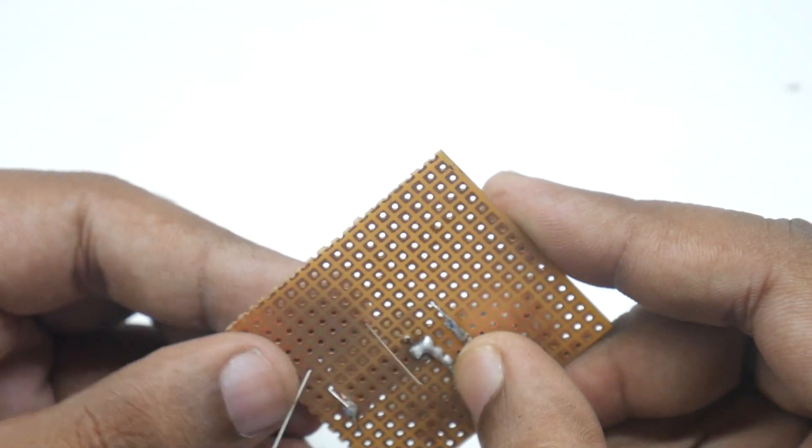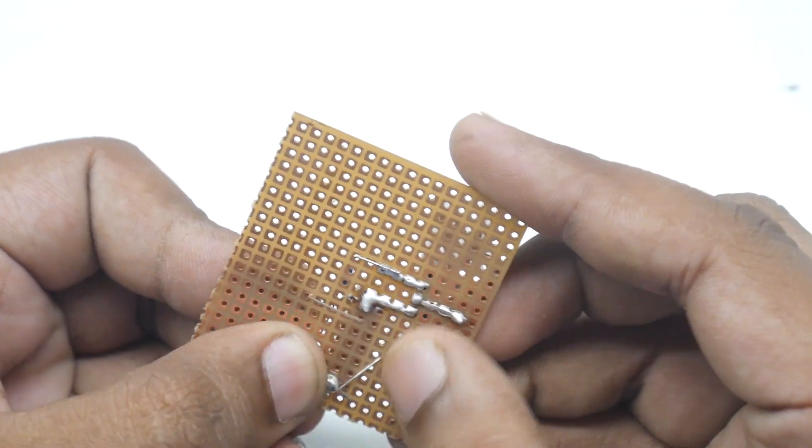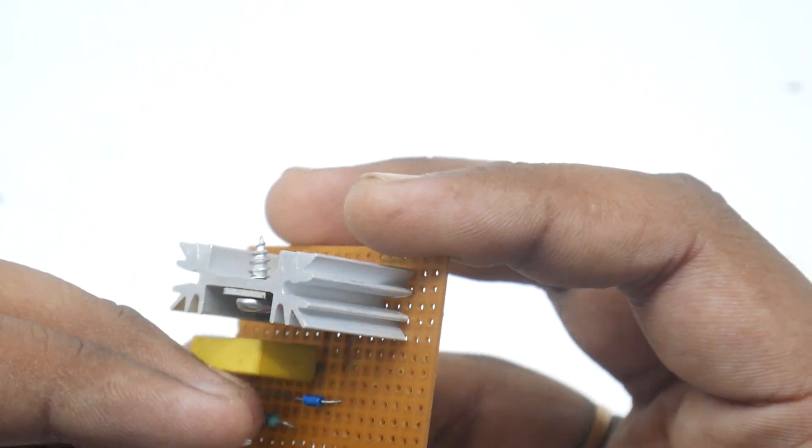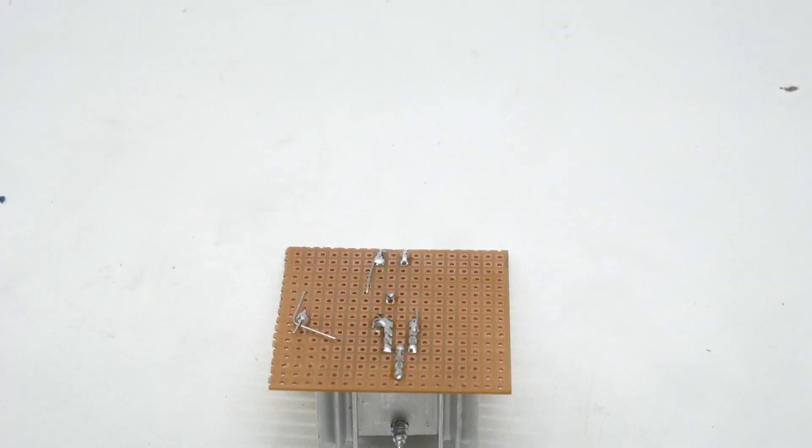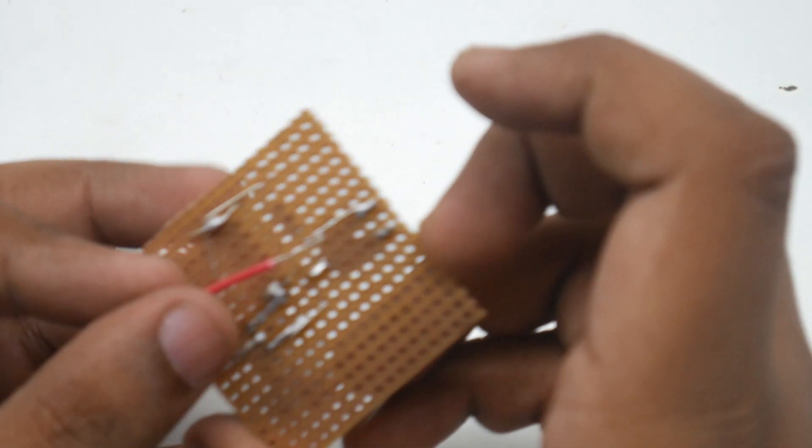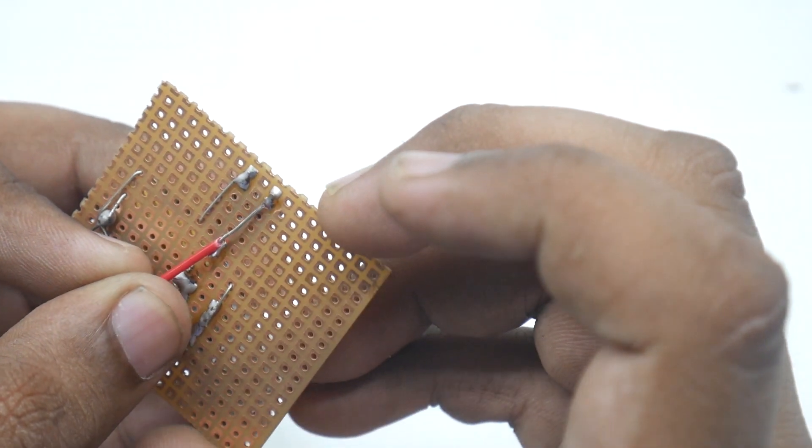And now from this end, we will connect the 2.2k resistor. We have soldered it. Short these wires from this end to this end.